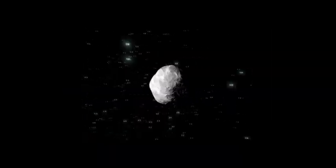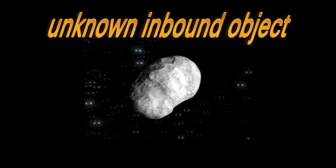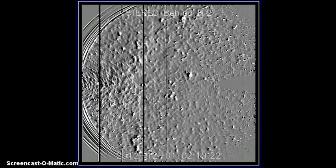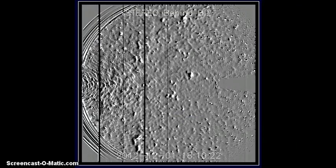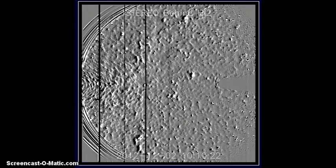Thor News presents: Unknown Inbound Object. Here we're watching the stereo behind HI2 camera, showing Earth and Jupiter where they are located. Now as you watch, we have an unidentified object coming in pretty dang fast.